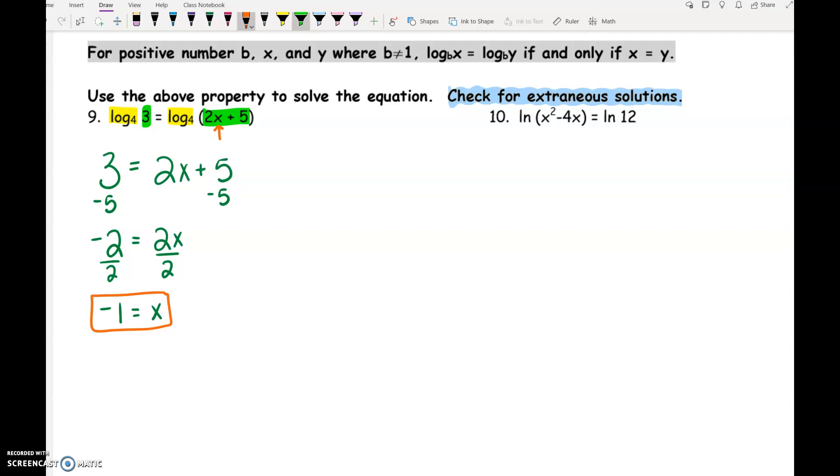The next one, they're going to get a little sneaky on us. Ln of stuff equals ln of stuff. So x squared minus 4x has to equal 12. Do you see how they're getting sneaky on us? We have x squared and x. How do we solve equations when we have x squared and x? We have to factor. We need to get one side equal to 0, and we need to factor and solve.